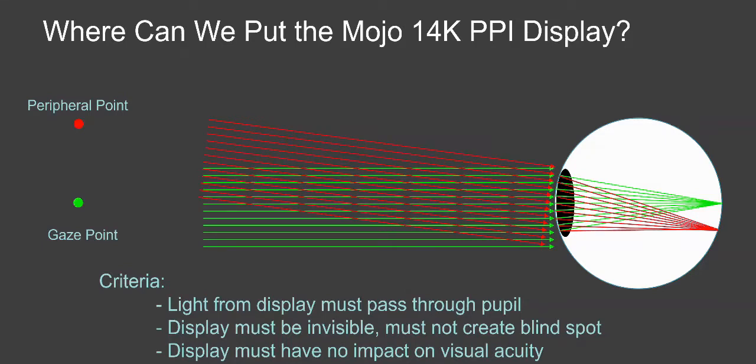If you have 20/20 vision, you need to see the world with 20/20 vision, because most of the time, frankly, the display is probably going to be off. You're going to be wearing this contact lens all day. You want to be able to see clearly. So where can we put that display?